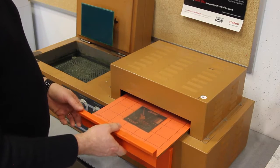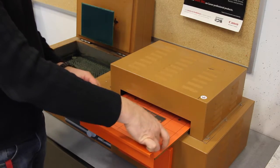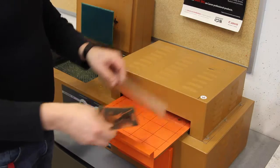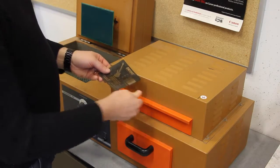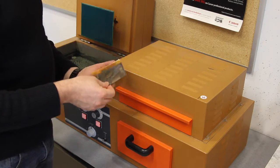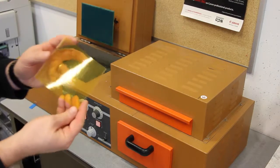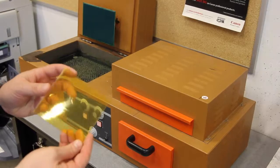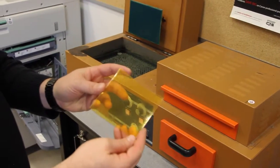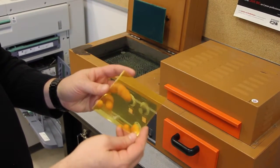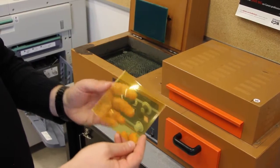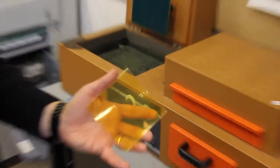And now we've turned it off, we can see the exposing lights, the UV lights have been turned off. What we can also do is turn off the vacuum which will allow us to remove the combination of ortho film and polymer plate. We're done with the ortho film now, we can put that aside, and you can see an impression on the polymer plate of what has been exposed.